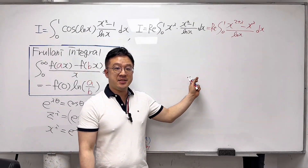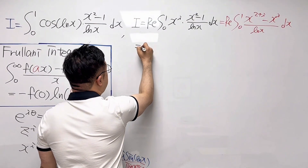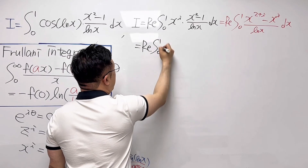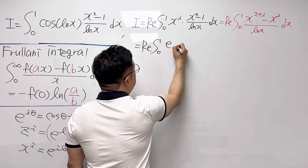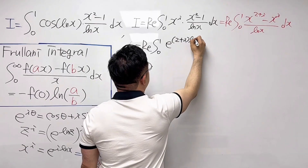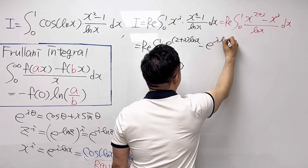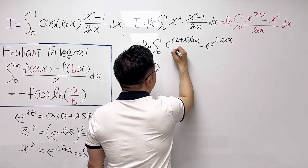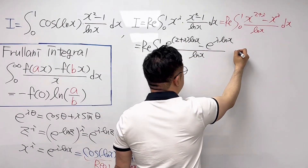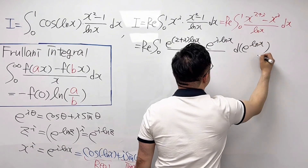Since x equals e^(ln x), we can rewrite this integral as the real part of the integral from 0 to 1 of [e^((2+i)·ln x) minus e^(i·ln x)] over ln(x), dx, where dx equals d(e^(ln x)).